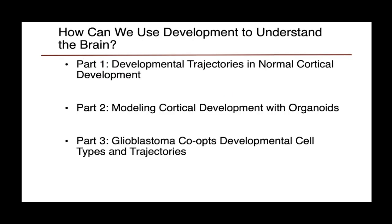I'll start by discussing how developmental trajectories in normal cortical development create a basis from which we can then interrogate other aspects of modeling or disease. I'll then go into a comparison between these normal cell types and cortical organoids, specifically interrogating how we can better model in vitro development of the human brain. And finally, I'll discuss how these same developmental trajectories can be co-opted in a cancer like glioblastoma, showing how these trajectories may be important aspects of cellular biology that can be reactivated during different time points in the lifespan, often in a disease context.